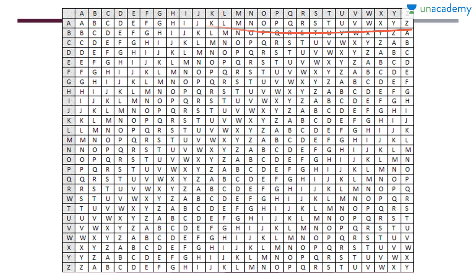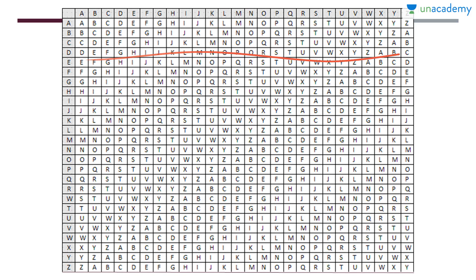The first row goes from A to Z. In the second row it starts from B and ends with A. In the next row it starts with C and ends with B, and the following row starts with D and ends with C. In the last row it starts with Z and ends with Y. That is the Vigenère table or Vigenère matrix.